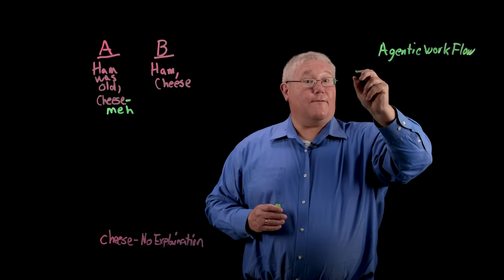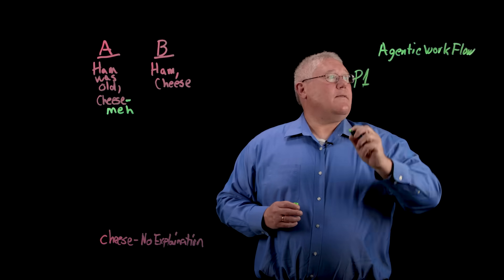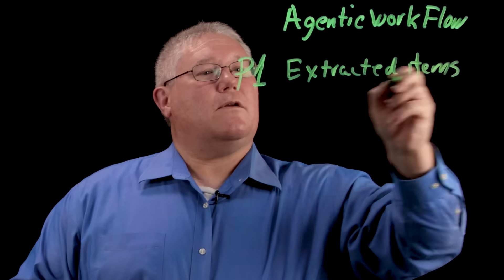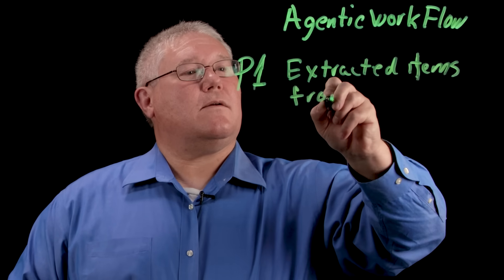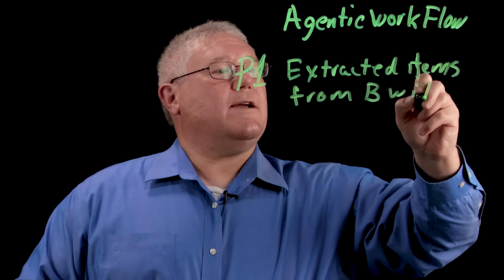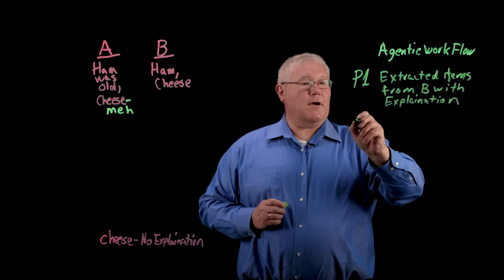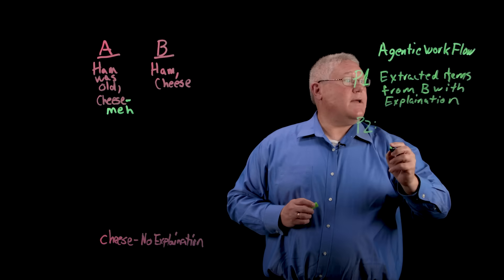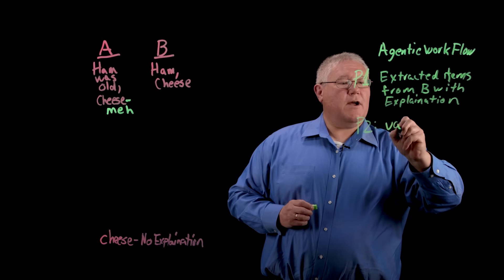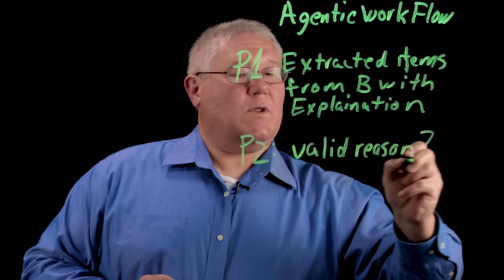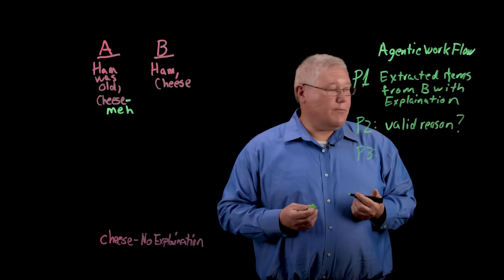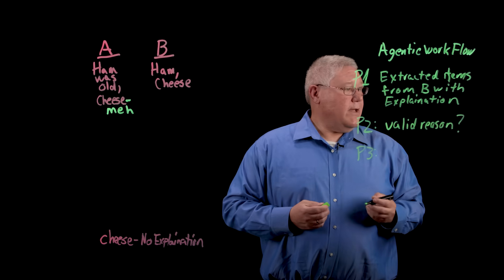So I had the first prompt, I had one prompt that extracted items from B with an explanation. The second prompt took the information from the first prompt and determined whether or not those reasons were valid. The third prompt, and it probably didn't have to be a prompt, but you could use a prompt or an LLM to do it, is compare.